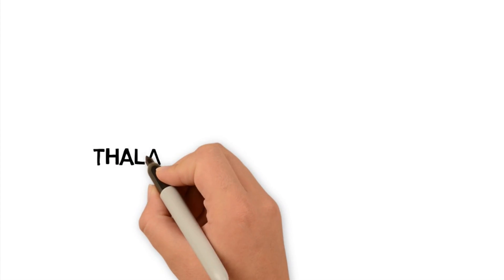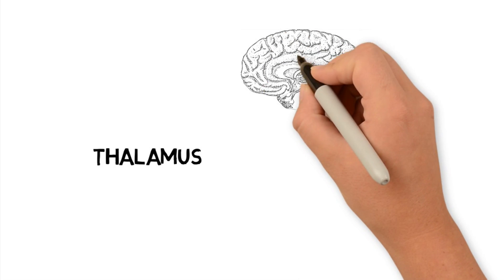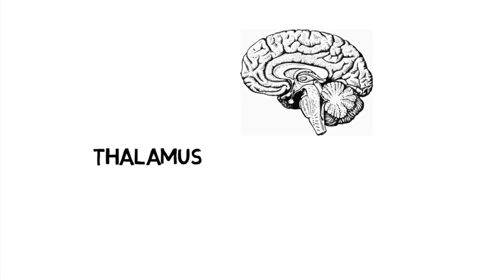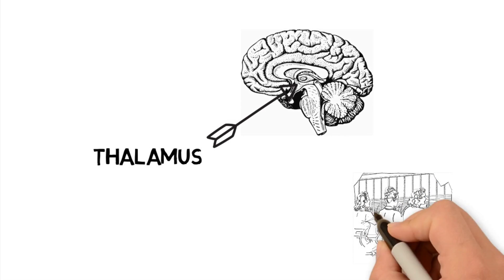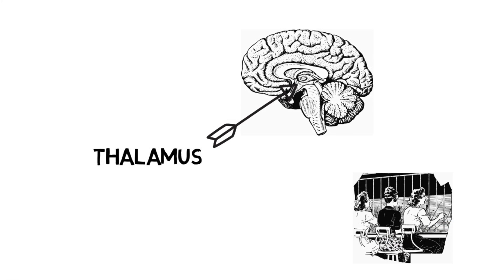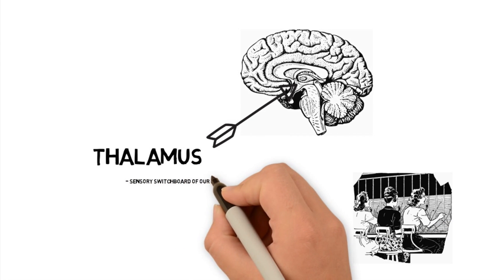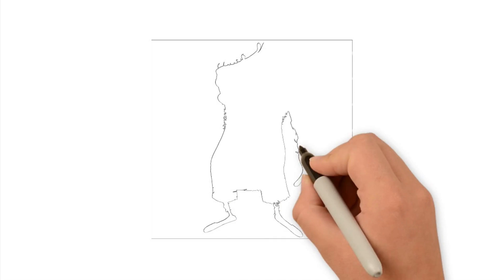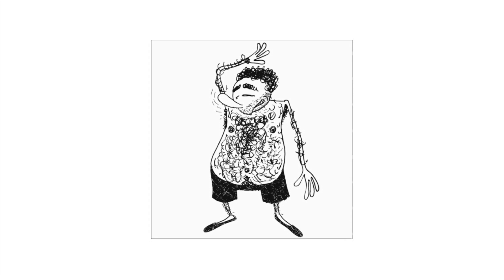Next on our ride up the brain, we have the thalamus. This egg-shaped structure is the sensory switchboard of our brain. Information from our eyes, ears, mouth, and skin go first to the thalamus. The thalamus then decides whether the information is even important enough to be moved up to the higher structures in our brain. If it is important, the thalamus sends it to the appropriate area in the brain to be processed. On a side note, smell is the only sense not to use the thalamus.